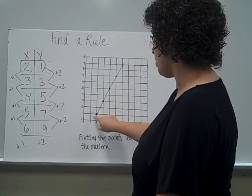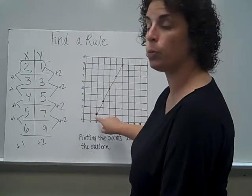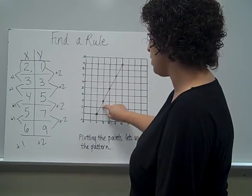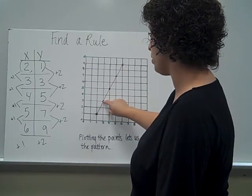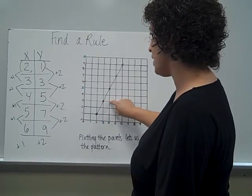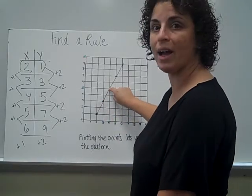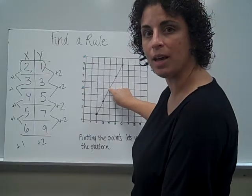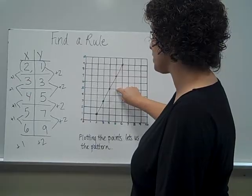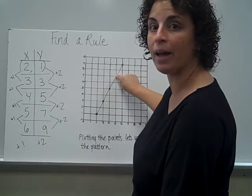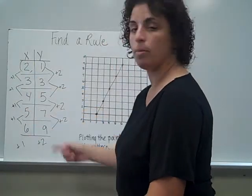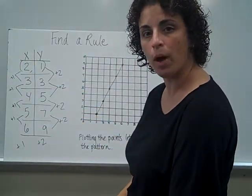When I'm looking at my first ordered pair, 2, 1, to get to my next one, I went over 1 and up 2 on the y-axis. Right here, I could go over 1 on the x-axis again and up 2 on the y-axis — and sure enough, that gets me to my next ordered pair. This pattern continues over 1 on the x-axis, up 2 on the y-axis, over and over because as these patterns continue, the numbers are going to be related in the same way.